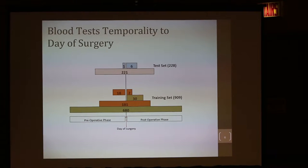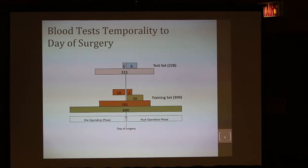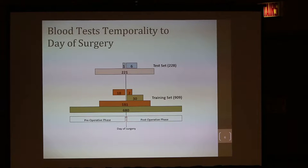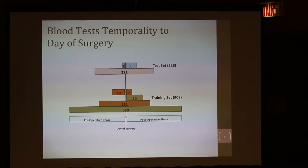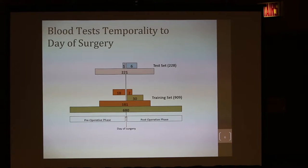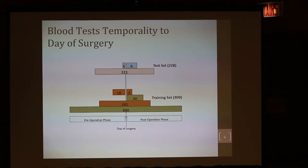In the infected group, 18 had pre-operative but no post-operative tests, and we don't know the reasons why. Two of the infected had post-operative blood tests but no pre-operative data. In the testing set, 221 had both pre and post. Six did not have any tests done pre-operatively. So those 50 infected were in the 222, not 228, because six did not have any tests done pre-operatively at all.